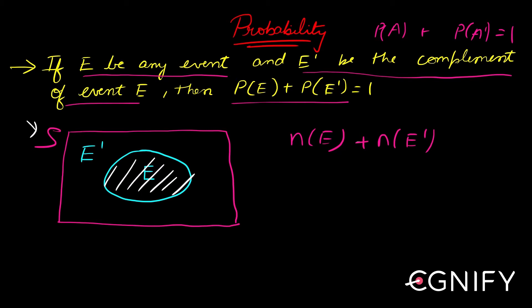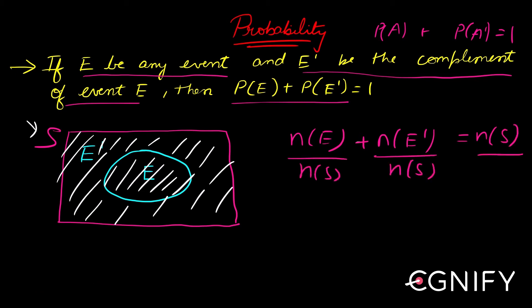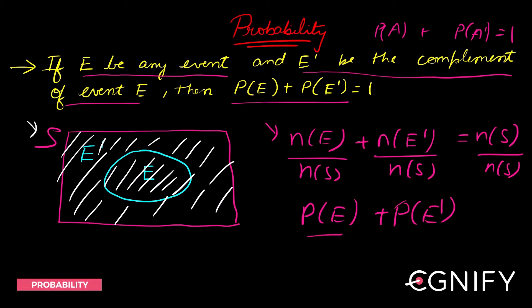When you add n(E') to n(E), you're counting the cases in the sample space that fall outside E — the outcomes outside the blue oval but still in S. Adding these two gives you the total number of elements in the sample space. Dividing everything by n(S), we get n(E)/n(S) + n(E')/n(S) = 1, which is P(E) + P(E') = 1. So the probability of an event plus the probability of its complement always sums to 1.